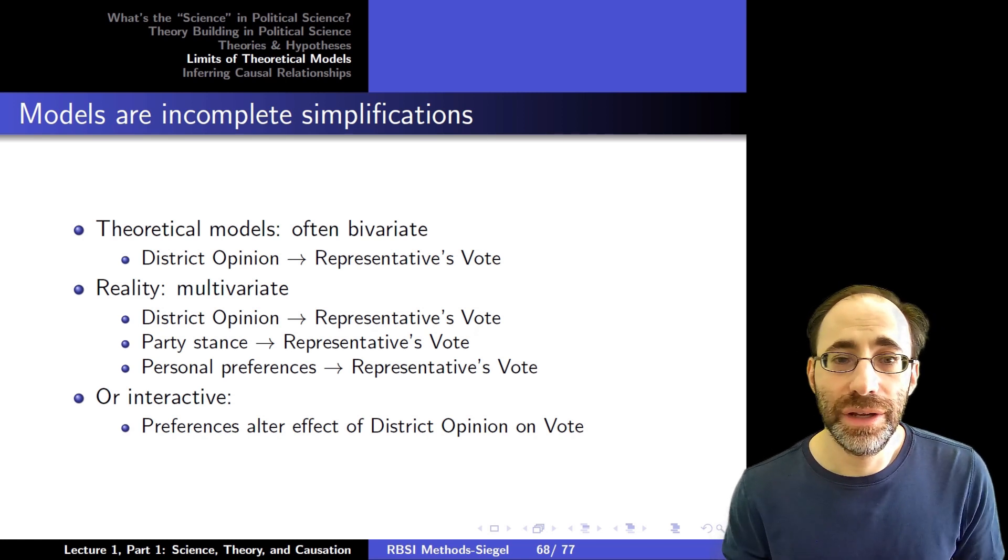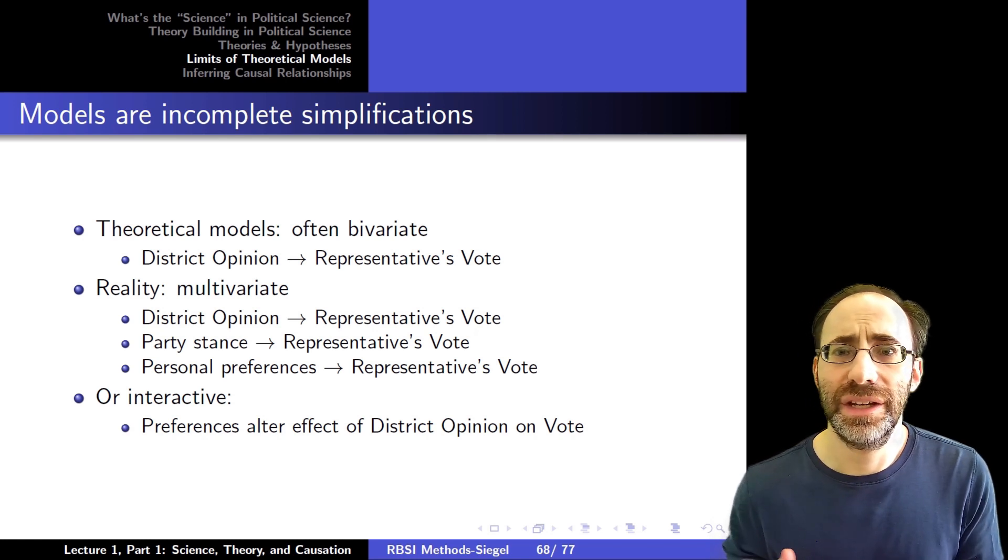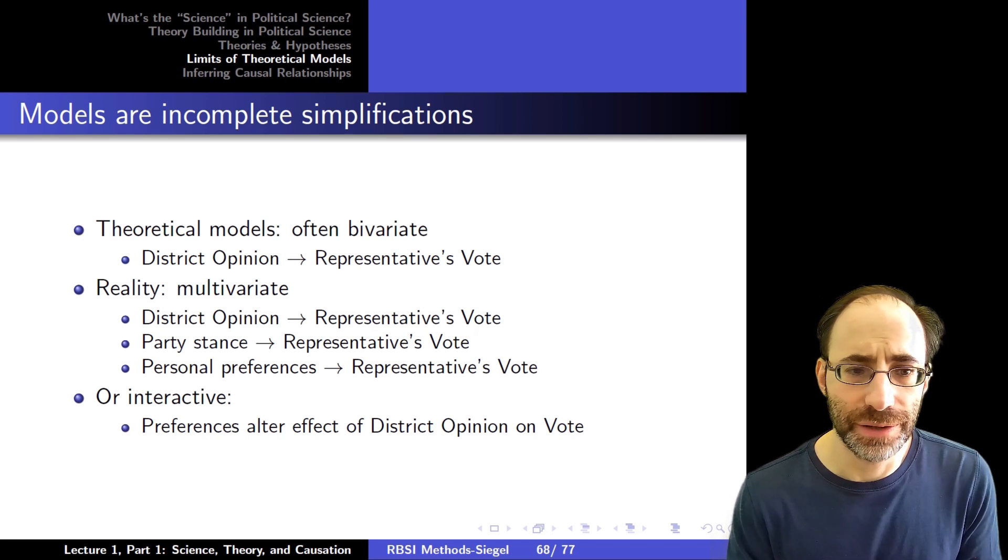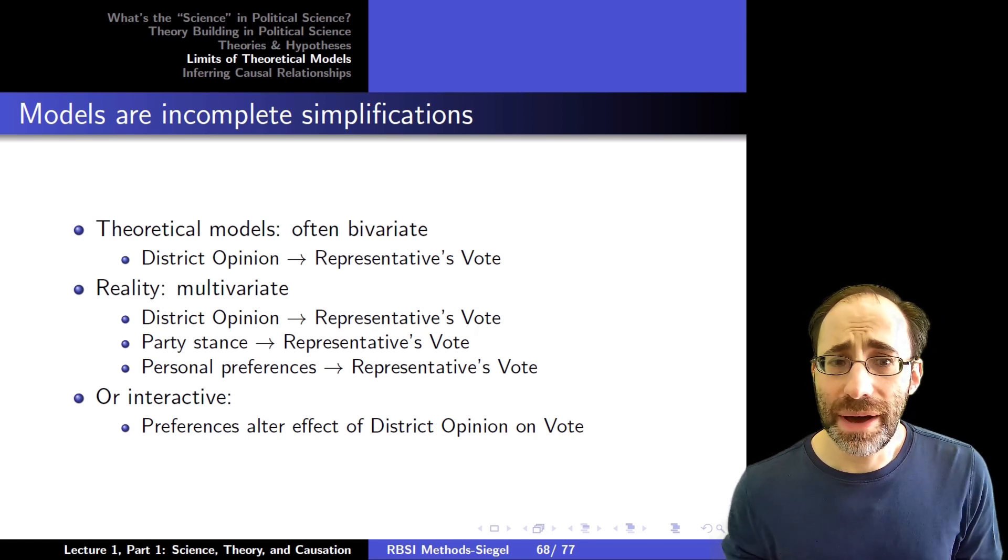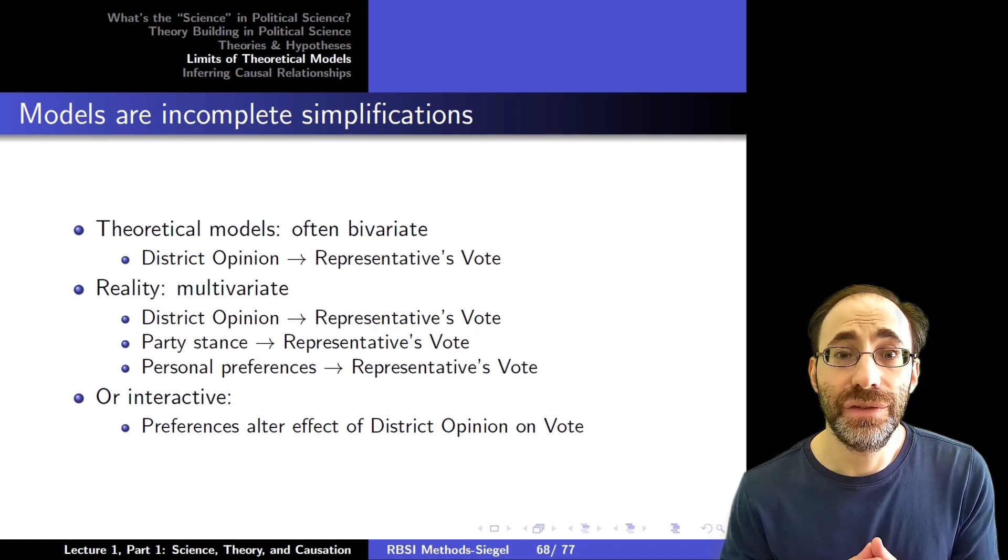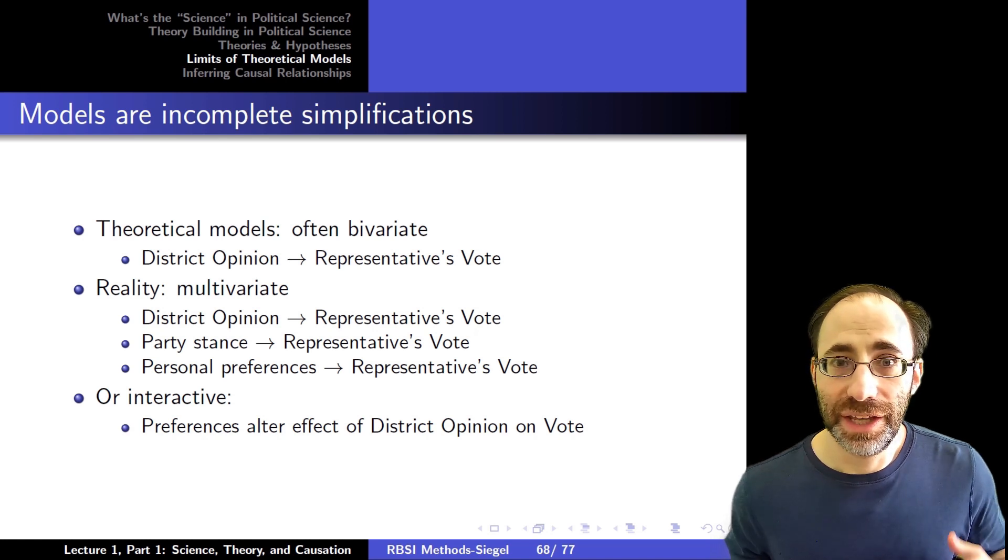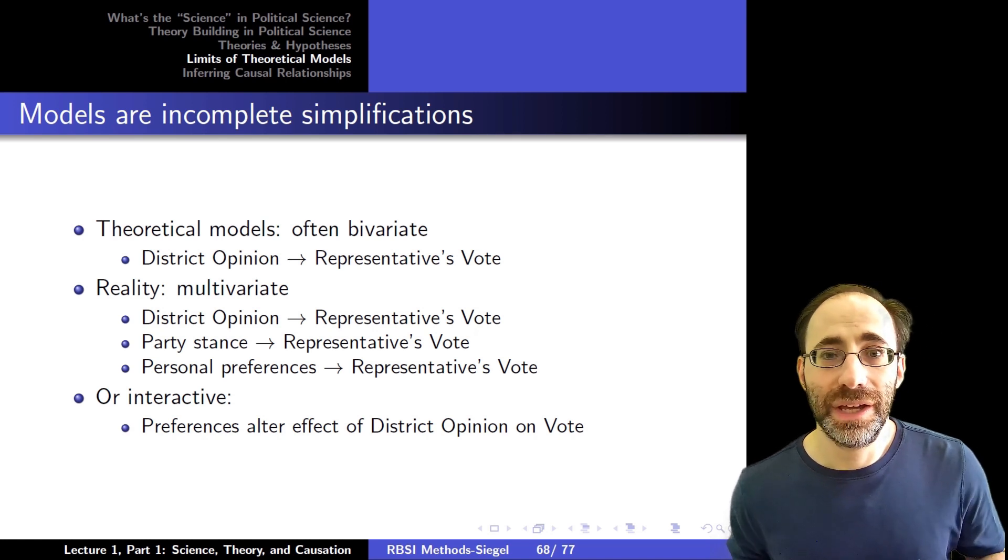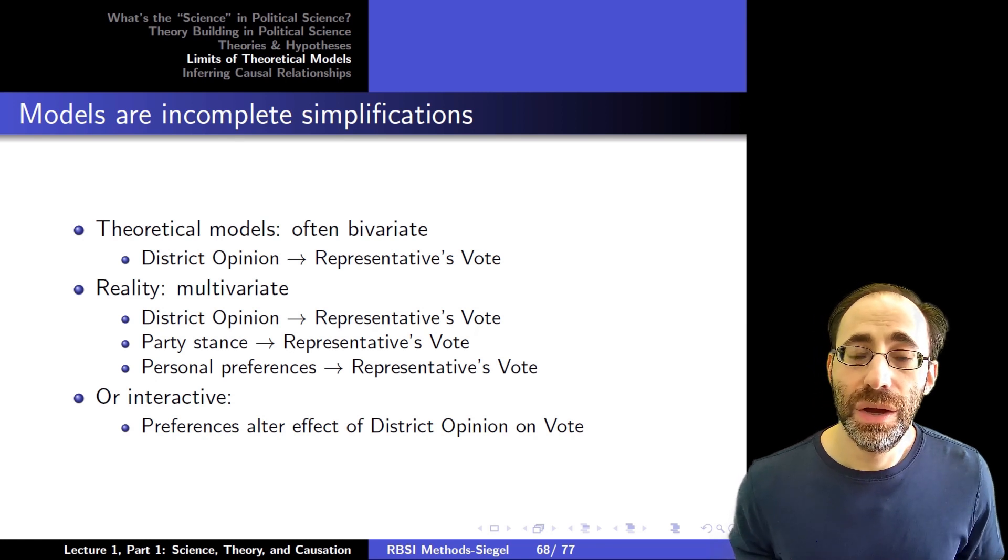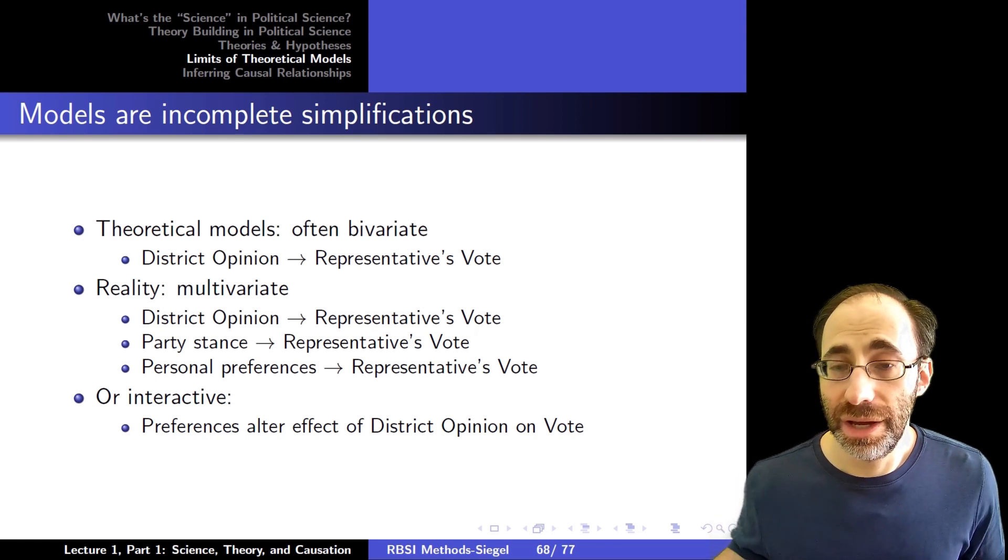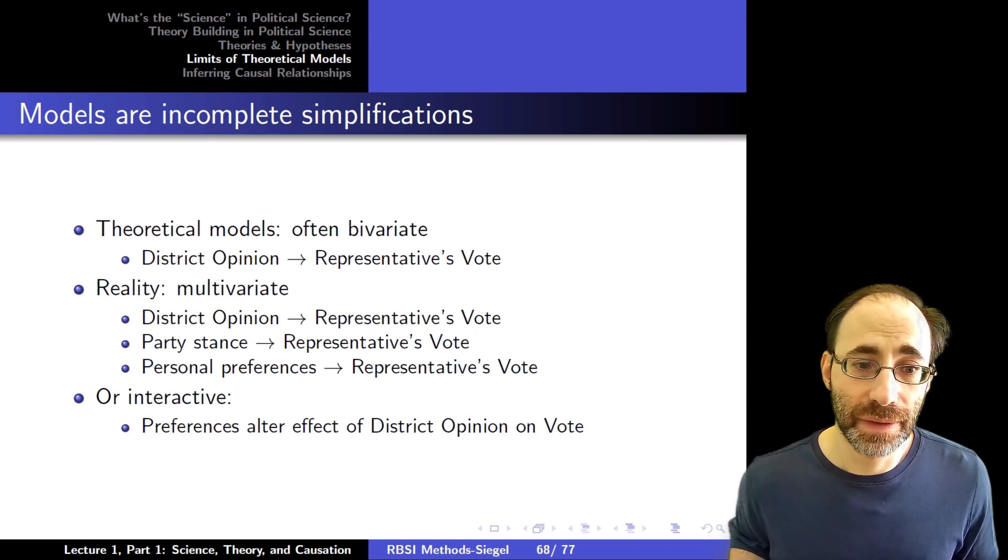We're going to end here by reiterating some stuff we said before in a more concrete fashion, and then discussing threats to what we're trying to do here. So first let's begin by reiterating that models are incomplete simplifications of reality. Our models are often very simple. They might be bivariate, so containing only two variables. So they might connect the opinion of an electorate in a district with the votes of a representative in a legislature of that district, very directly.